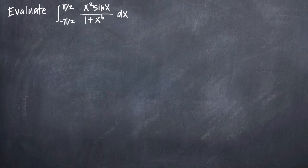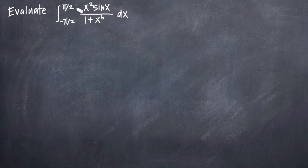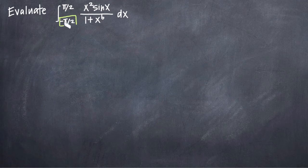In this particular problem, we've been asked to evaluate the integral of x squared sine x divided by the quantity 1 plus x to the sixth, on the range negative pi over 2 to pi over 2. The first thing you want to notice is that you're evaluating the definite integral on the range negative a to positive a, where a is a constant.